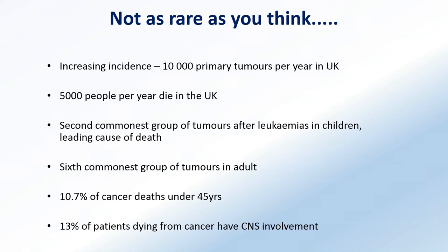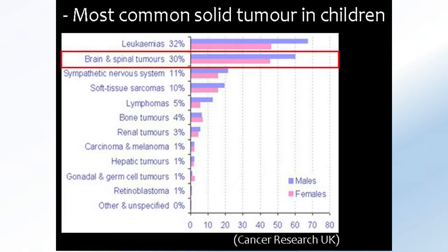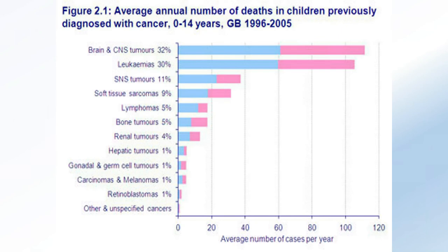In children, brain tumors as a whole are the second most common group of tumors only behind leukemia, and yet it's the leading cause of death. In adults, it's the sixth most common group of tumors when all cancers are considered together. In patients under the age of 45, it accounts for almost 11% of cancer deaths in the UK. When you include brain tumors that arise from other parts of the body, around 13% of patients that die from cancer have brain or central nervous system involvement.